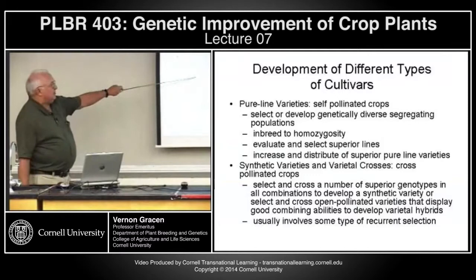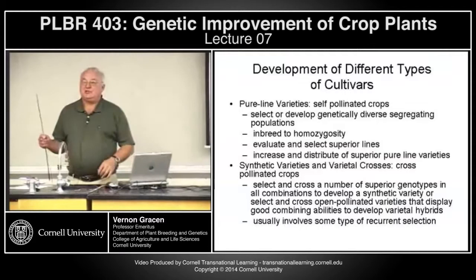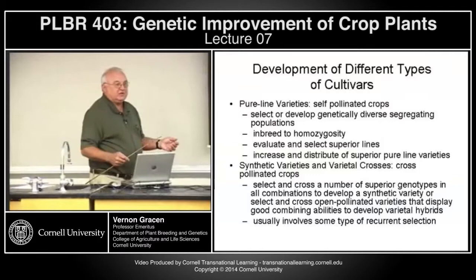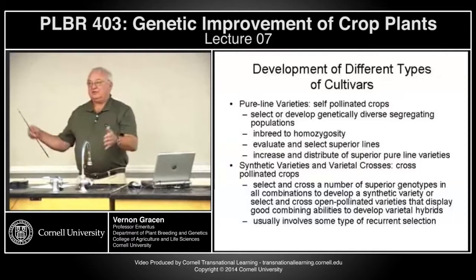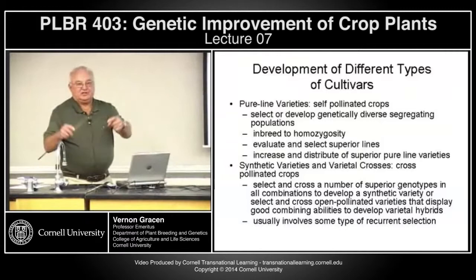For synthetics, you select and cross a number of superior genotypes in all combinations. For open-pollinated varieties in maize, for instance, you can take a series of half-sib families, detassel the whole series, and have a different series of half-sib families as the male. This way you can look for combining ability or heterosis with a little more control over the variety than in a simple synthetic.